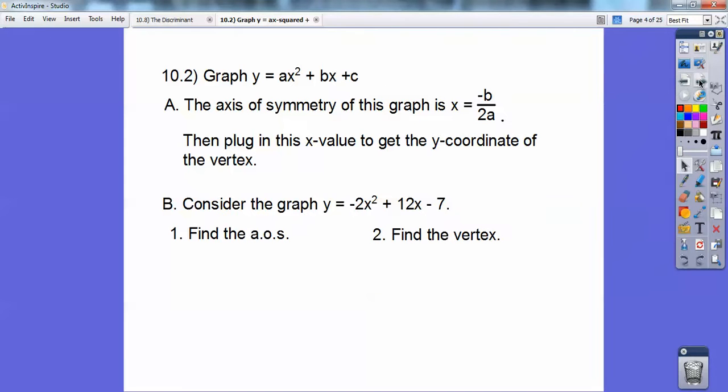All right, so consider the graph y equals negative 2x squared plus 12x minus 7. Let's find the axis of symmetry. Up here, x equals opposite b, so it's going to be negative 12 over twice a, so over 2 times negative 2. So negative 12 over negative 4 gives me a positive 3. So the axis of symmetry is x equals 3.